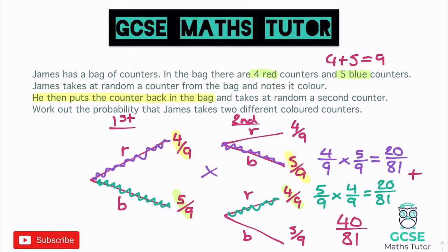Our final answer is 40/81. A few things to remember: construct the tree thinking about the first and second pick, multiply across the tree for each route, and add together any different combinations at the end. Of course, for a simpler question like 'what's the probability of two reds,' you only need one journey — 4/9 × 4/9 — and that's your answer.